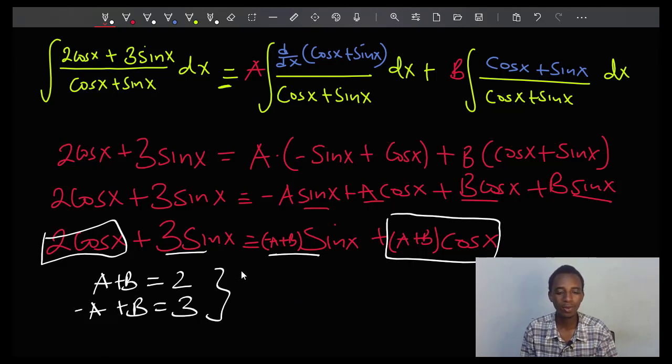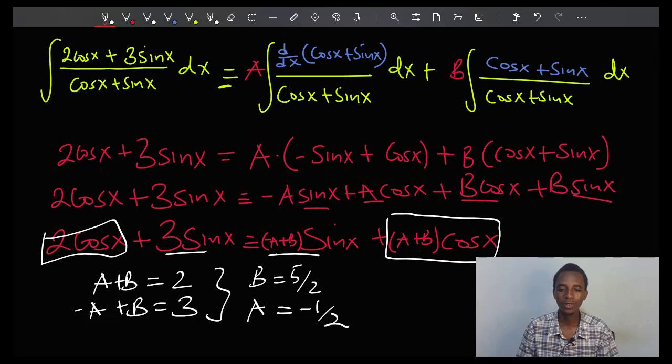By adding the two equations, you can already see that 2B equals 5, so B is going to be 5 over 2. And if you substitute the value of B in any one of those equations, A is going to be negative one half.